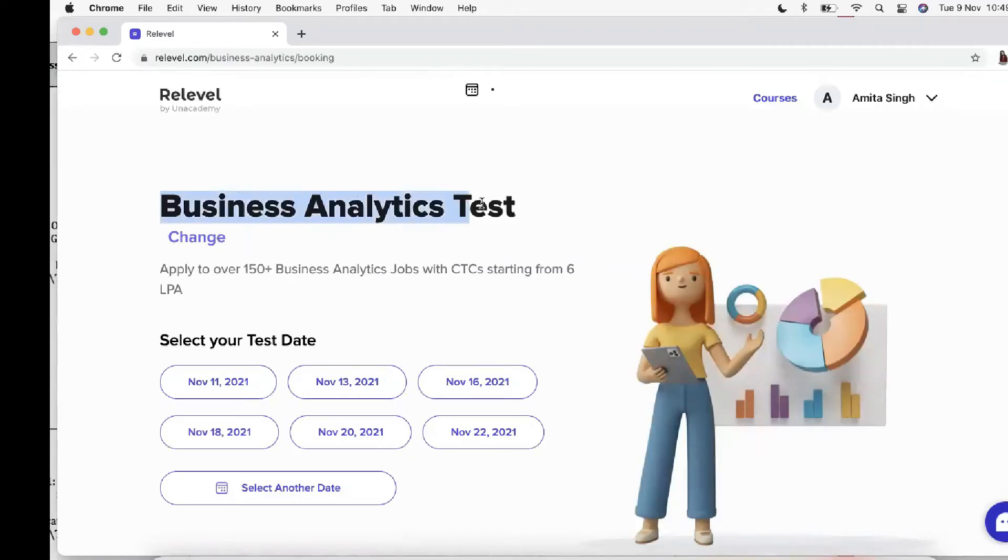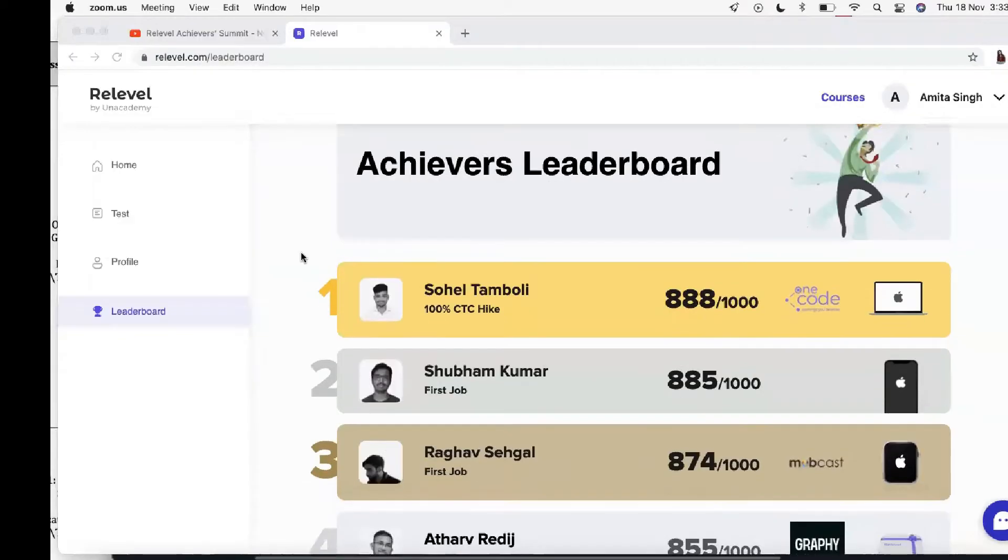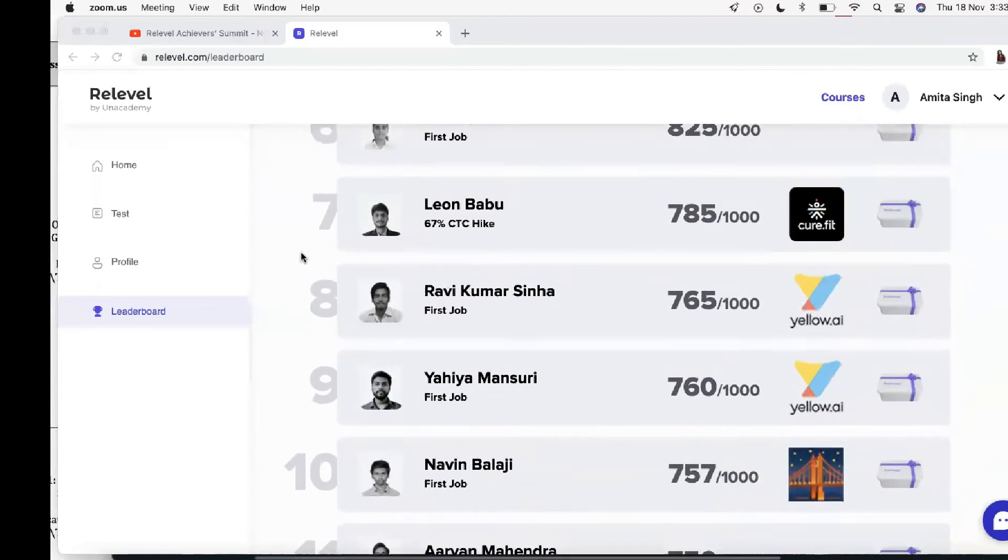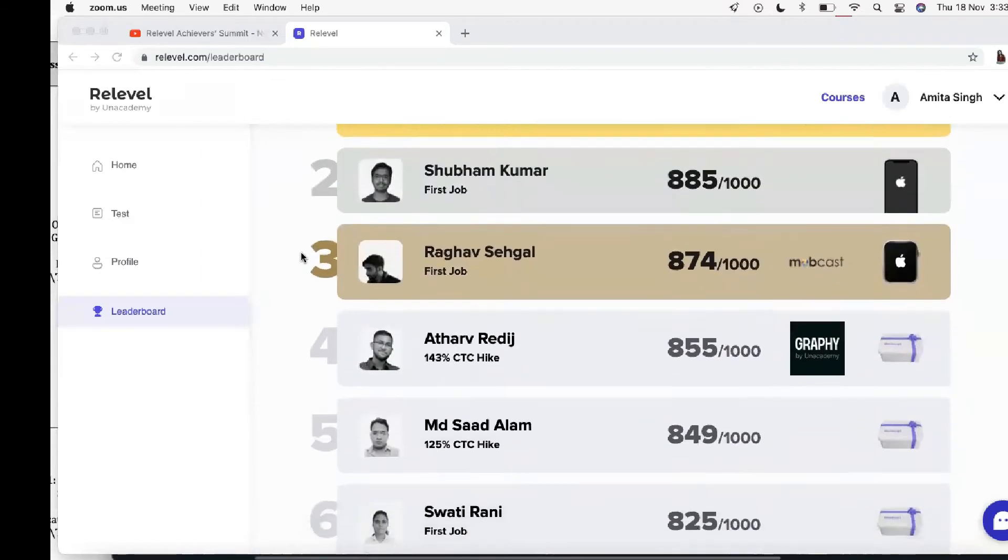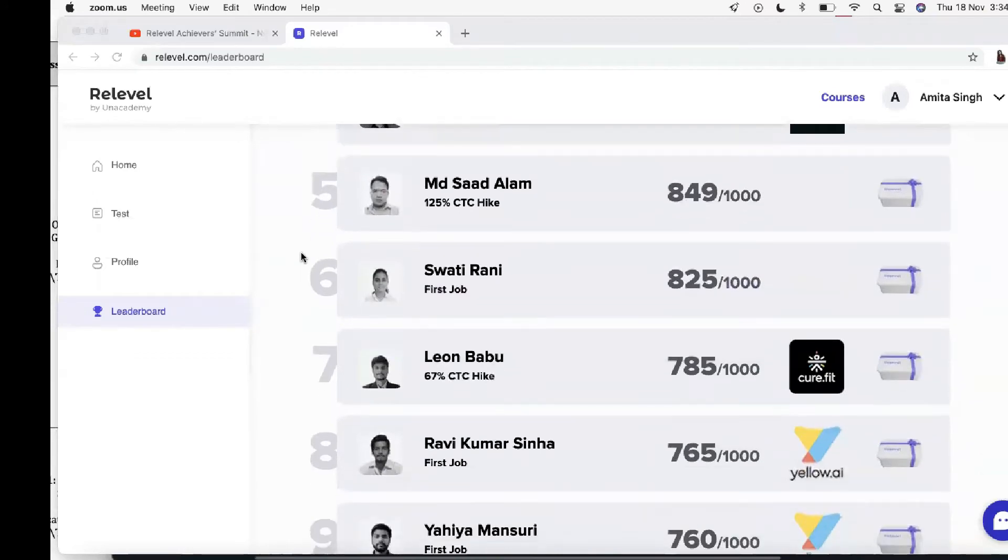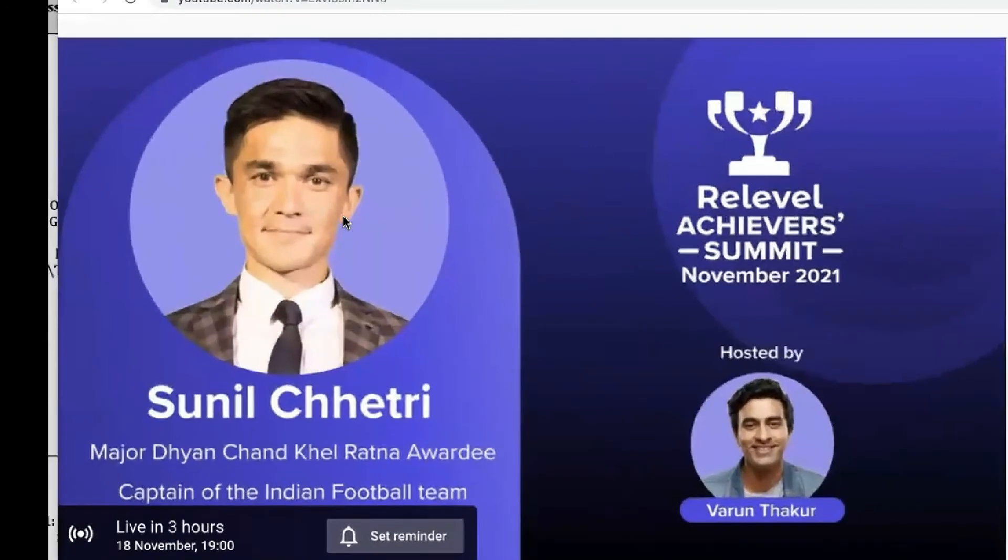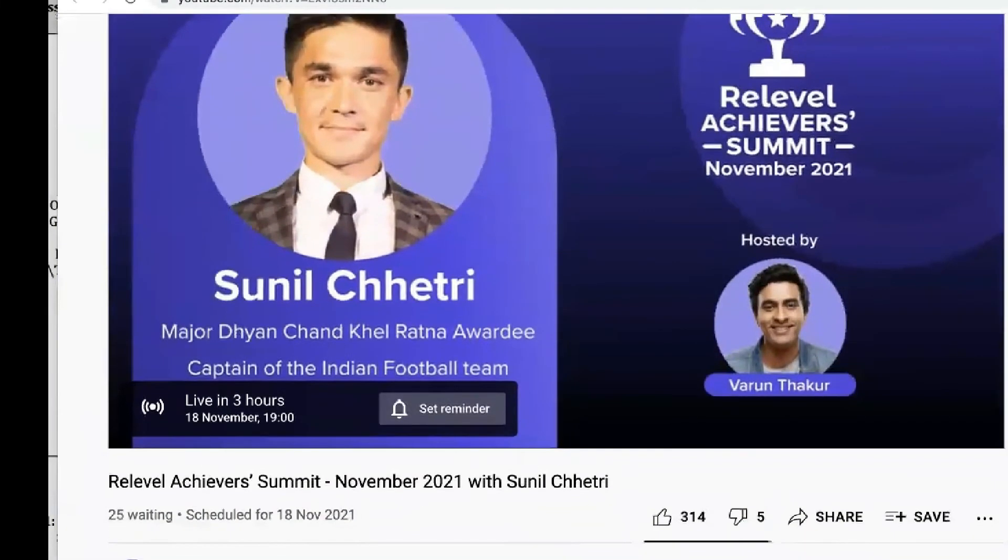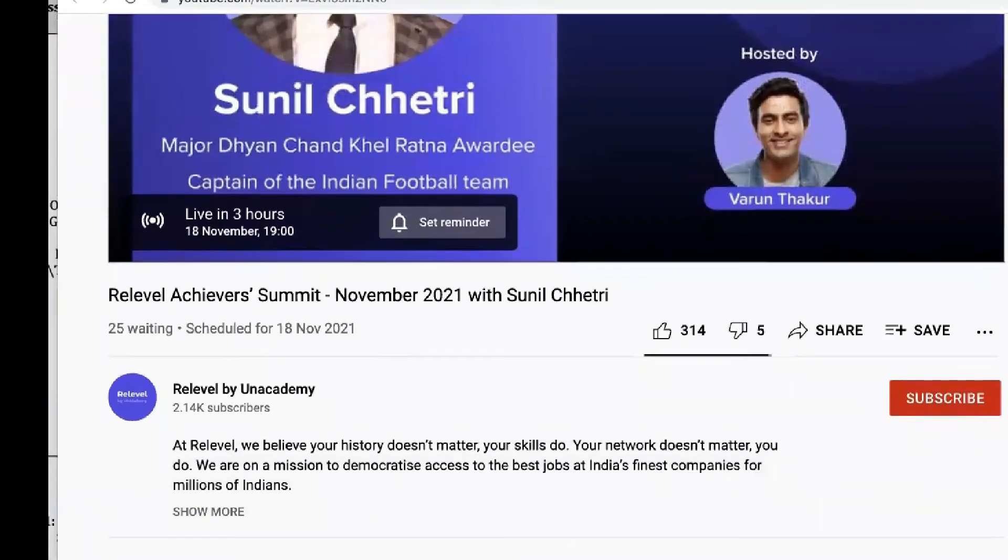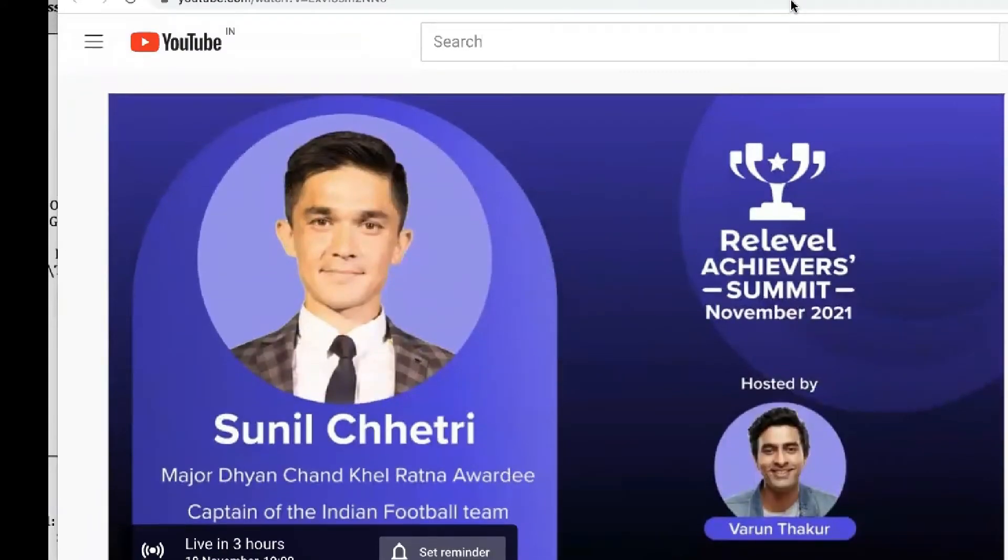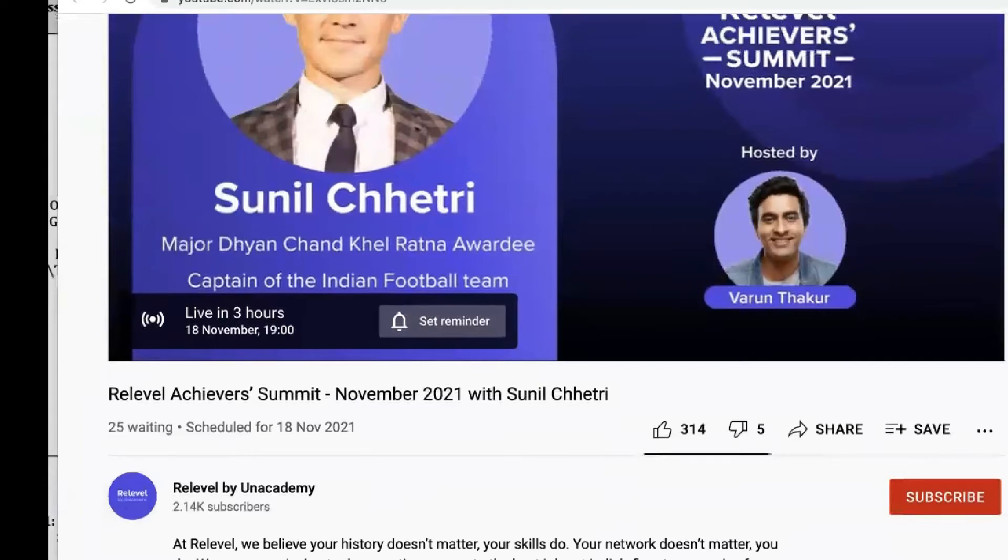And you can get the job up to 15 lakh per annum packages. An experienced candidate can get 50 percent hike from their previous job. Registration process is simple - you just need to sign up, then select your preferred category, then book your slot and date. The test will be completely online. They have recently started showcasing candidates who have been placed in some amazing companies through Relevel. You can find out these profiles on their leadership board. Also, Relevel is hosting their first ever Achievers Summit this Thursday at 7pm. This is going to be an amazing event - they have Sunil Chhetri coming in to celebrate the achievement of all the candidates who have been offered a job through Relevel, and the event will be hosted by Varun Thakur. It's going to be fun, motivating and full of enthusiasm. Check out their channel in the description, subscribe today and set the reminder so you don't miss out on an amazing event. And one of the Relevel achievers was offered 40 lakh per annum job from Cred - he is going to speak about it.